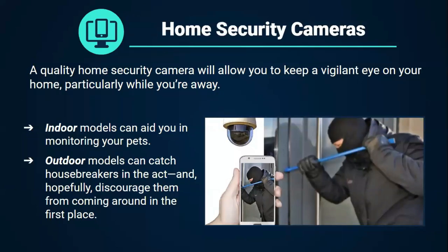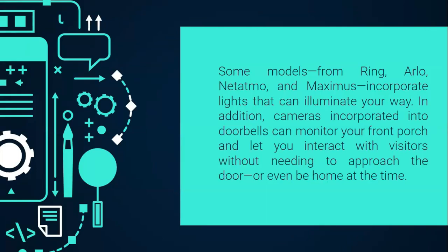Home security cameras. A quality home security camera would allow you to keep a vigilant eye on your home, particularly while you are away. Indoor models can aid you in monitoring your pets. Outdoor models can catch house breakers in the act and hopefully discourage them. Some models from Ring, Arlo, Netatmo, and Maximus incorporate lights that can illuminate your way. In addition, cameras incorporated into doorbells can monitor your front porch and let you interact with visitors without needing to approach the door or even be at home.